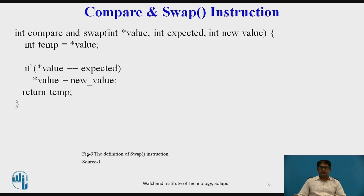The compare-and-swap instruction, in contrast to the test-and-set instruction, operates on three operands, as defined in this diagram. The operand value is set to a new value only if the expression matches. Compare-and-swap always returns the original value of the variable, and like test-and-set, compare-and-swap is executed atomically.